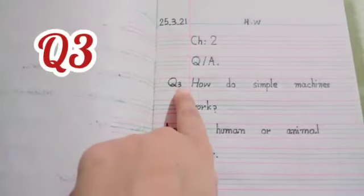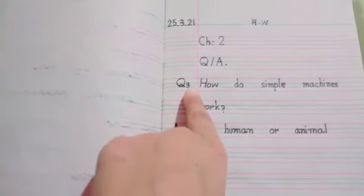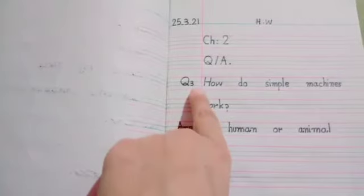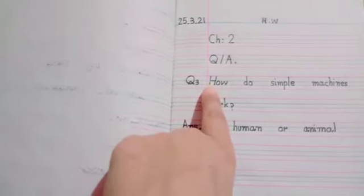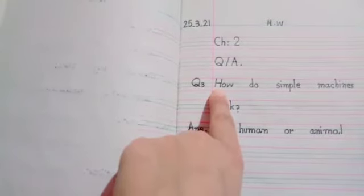Today is question 3, so we write Q3. Your question 1 and question 2 are complete, and today is question 3. Write, first of all, first letter is capital. First letter we write in capital: H-O-W how.